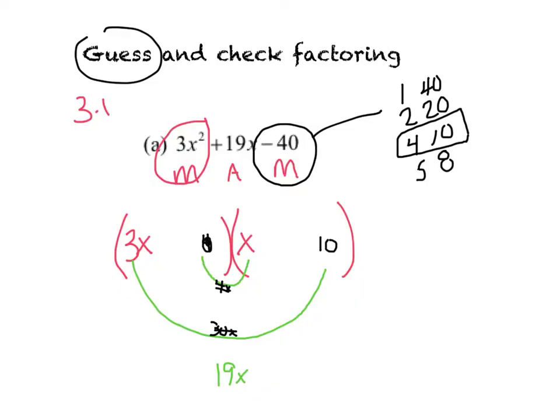What I can do is now switch my order. I can put the 10 here and the 4 here. Check again. So I'm guessing and checking. This is 10x, this is 12x. Can 10 and 12 ever add up to 19? No. So what does that tell me? Those two are not it.